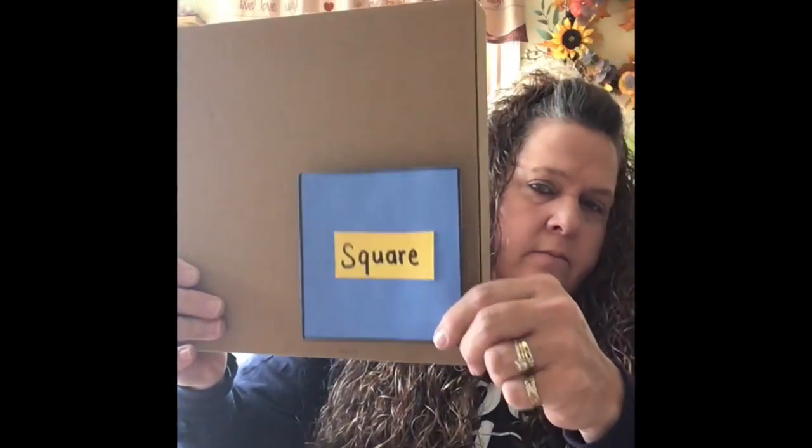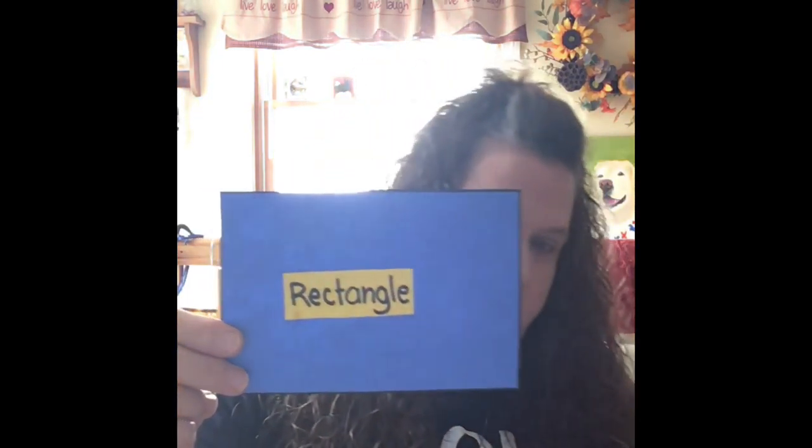Then I searched for squares and I found a square box — a little box — and then a bigger box. Does it look like a square? How many sides does it have? It has one, two, three, four — it has four sides, just like my square here: one, two, three, four.